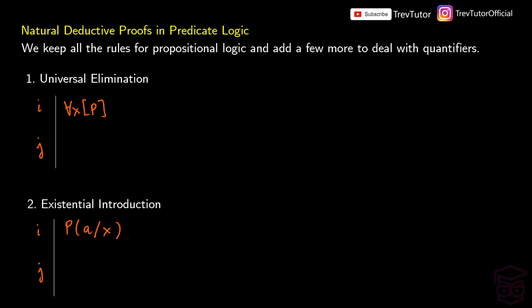Imagine we have a well-formed formula that says for all x, P(x). So this could be for all x, F(x), or something like this. What this means in our proof is that we can substitute anything in for x, because we know everything in the universe has the property of F. So we could say, okay, we have F(a), or we could pick F(b), and so on — we can pick any constant we want. This is universal elimination, written as ∀E.